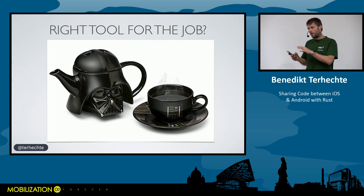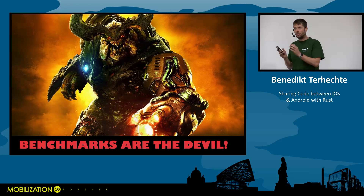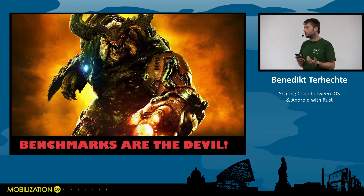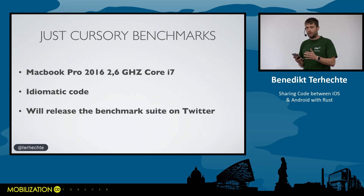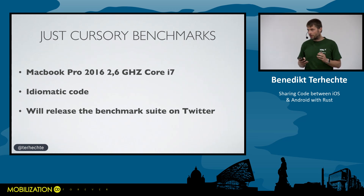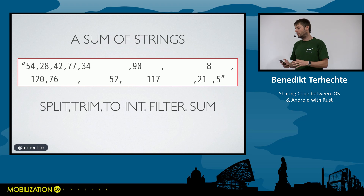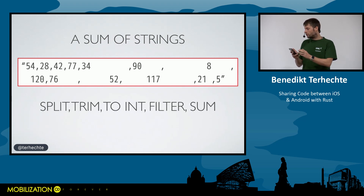To figure out how good Swift and Kotlin are compared to Rust, I wrote some benchmarks. I know benchmarks are tricky and people say they're the devil, but I tried to write simple, idiomatic code — very short snippets — to compare what the code looks like and what the end result is. I'll release everything on Twitter so you can look yourself. The first task: take a long string of numbers separated by commas and whitespace, split by comma, trim whitespace, convert to integers, and sum them.